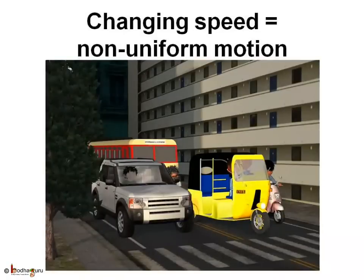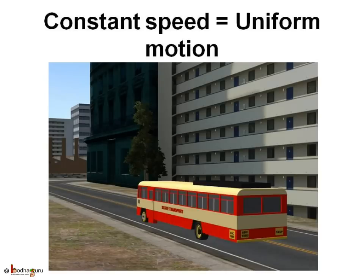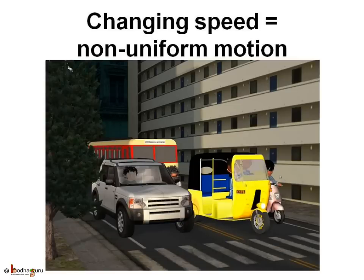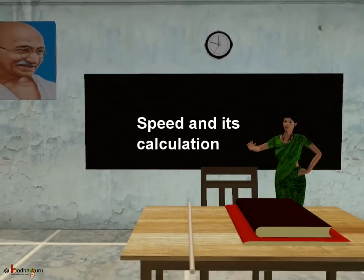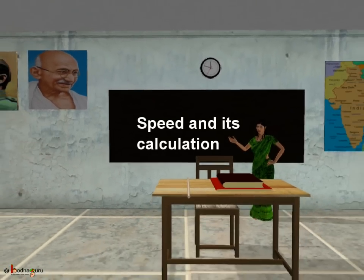In short, if the speed of a moving object keeps changing, its motion is said to be non-uniform. On the other hand, if the object keeps moving with a constant speed, it is said to be in uniform motion. Today we have learnt what is speed and how to calculate it. That's all for today. Bye-bye kids!